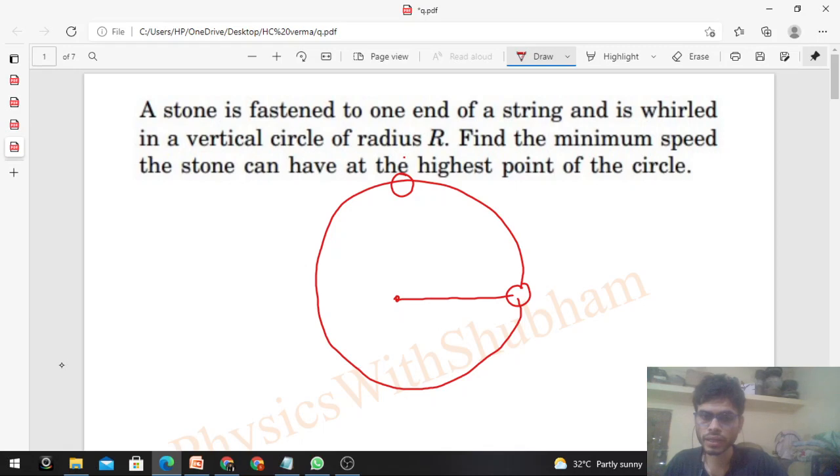So at the topmost point, let's say the speed is u. Let's draw the free body diagram at the topmost point. You can see the string is vertical, so downward there will be tension, and in the downward direction weight mg acts. For circular motion, the net force towards the center, which is mg plus tension in this case, should be equal to mu squared upon r.